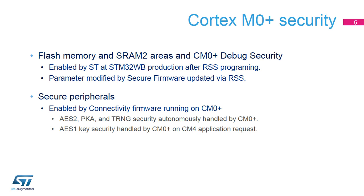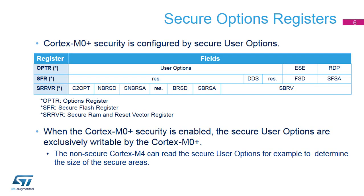The AES1 key security is also managed by the Cortex-M0 Plus when requested by the Cortex-M4 application firmware. The Cortex-M0 Plus security is controlled through secure user options loaded at device startup in the secure flash register and secure RAM and reset vector register. The secure user options can only be modified by the secure Cortex-M0 Plus, in other words, to change parameters when a secure Cortex-M0 software is updated. The non-secure Cortex-M4 has read access to the secure user options to be able to determine the start of the secure areas.